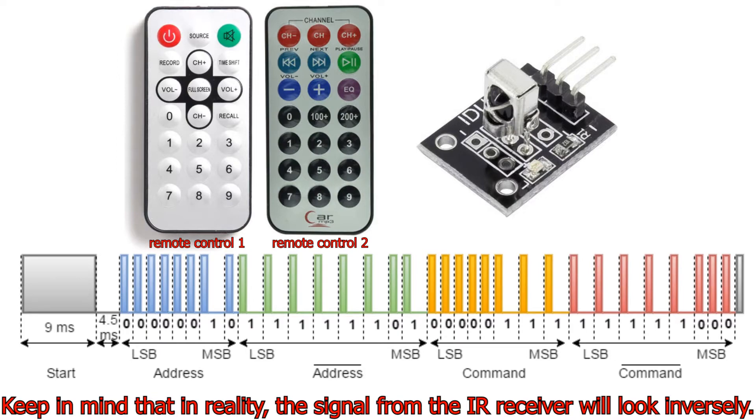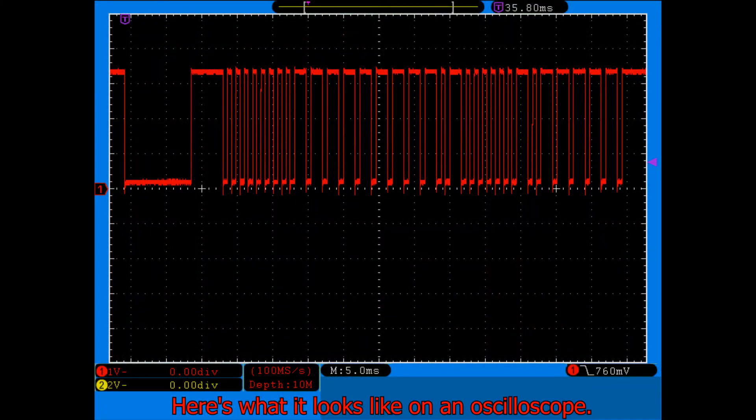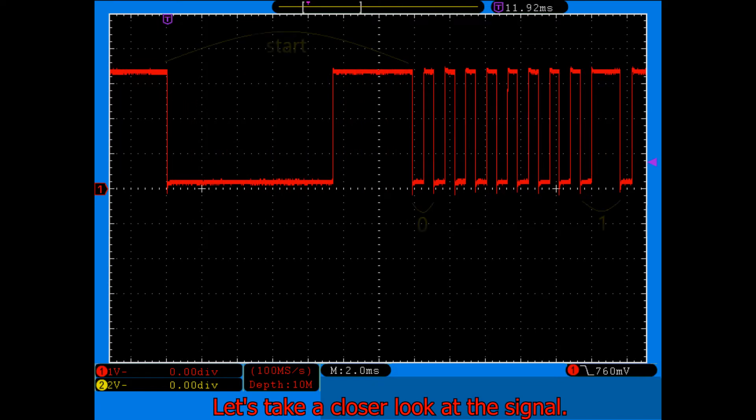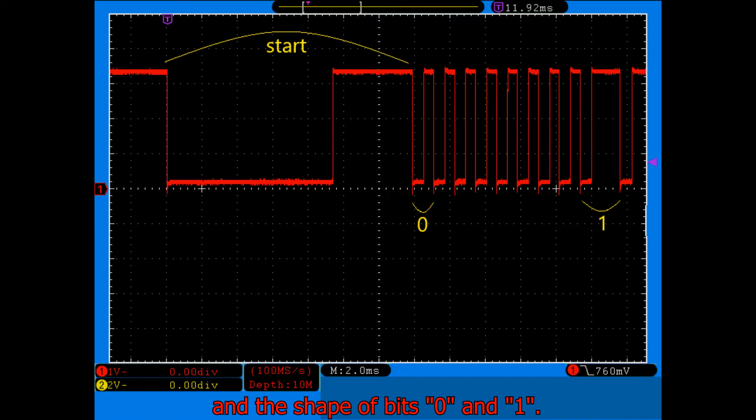Keep in mind that in reality the signal from the IR receiver will look inversely. Here is what it looks like on an oscilloscope. Let's take a closer look at the signal. Here you can clearly see the shape of the starting bit and the shape of bits 0 and 1.